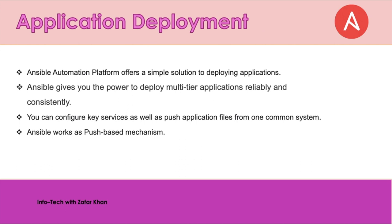Now, application deployment. Ansible automation platform offers a simple solution to deploy applications. It gives you the power to deploy multi-tier applications reliably and consistently, all from one common framework. Multi-tier means an application developed in more than one layer. You can configure key services as well as push application files from one common system. Ansible works as a push-based mechanism — this is very important from an interview perspective. Push-based mechanism means Ansible playbooks are pushed from the controller node to the managed nodes, where the actual playbook runs and performs specific tasks or actions.